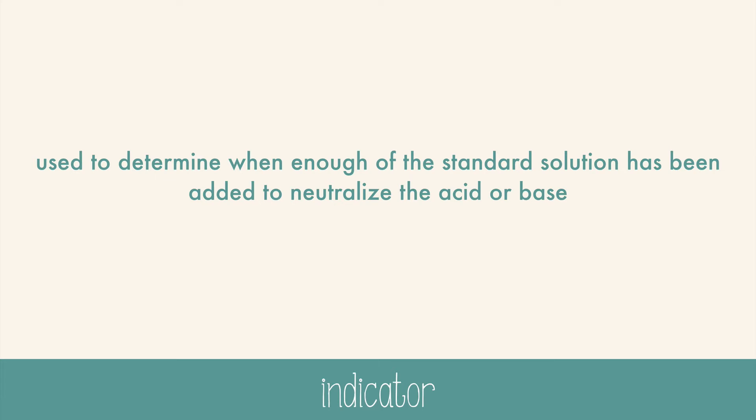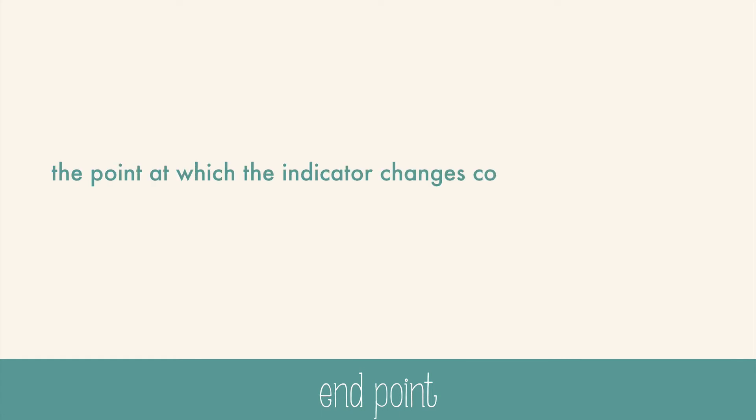The indicator needs to change color near the equivalence point. The point at which the indicator does change color is called the endpoint of the titration. The endpoint is not the same as the equivalence point, but it's usually very near it on the pH scale.